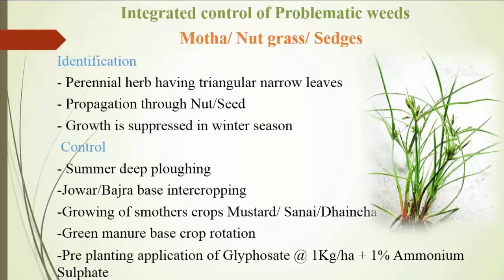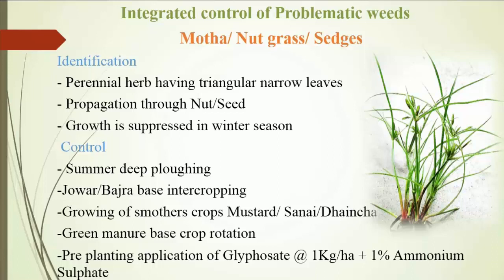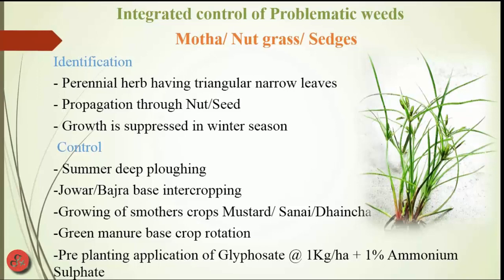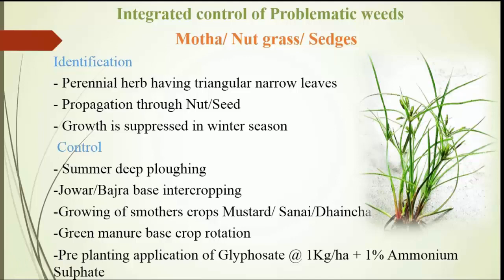Identification and control of some popular problematic weeds. First, motha, also known as nut grass. It is a perennial herb having triangular narrow leaves. Motha propagates through nut, oblique seed. Growth of motha is suppressed in winter season. Control: motha should be controlled by summer deep plowing, jowar or bajra-based intercropping, growing of smother crops such as mustard, sanayi, dhacha. Green-based crop rotation also controls nut grass. Application of pre-planting glyphosate at the rate of 1 kg per hectare with mixing 1% ammonium sulphate.